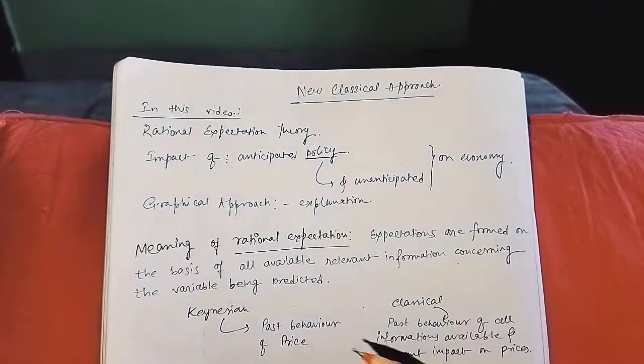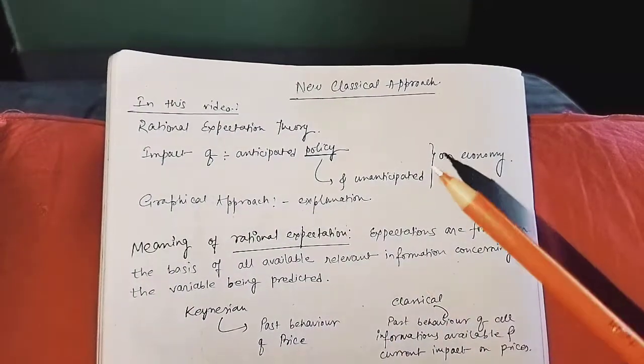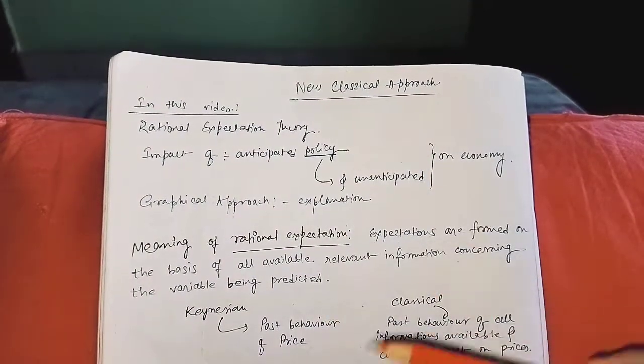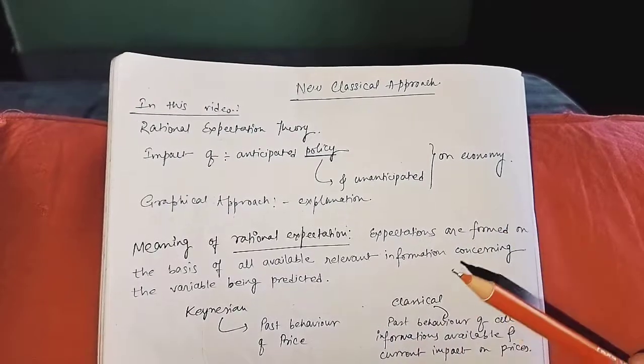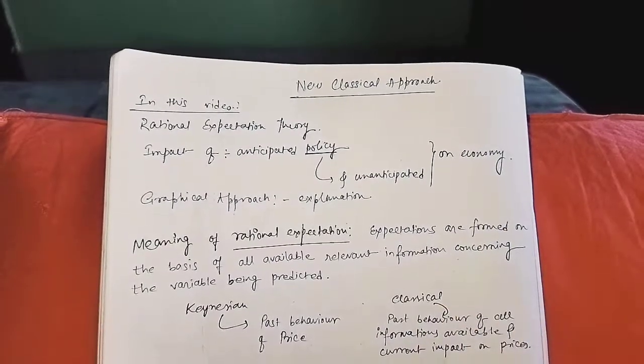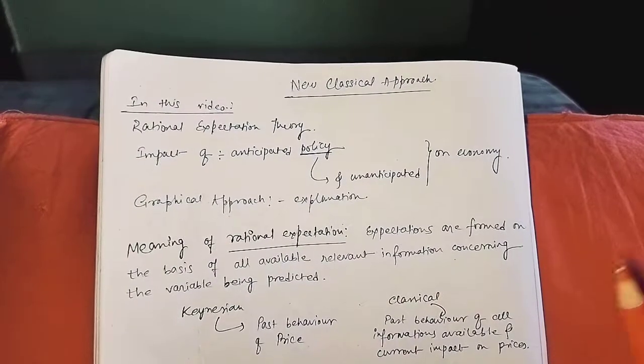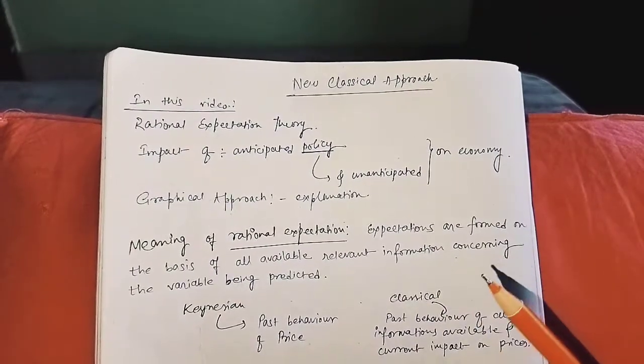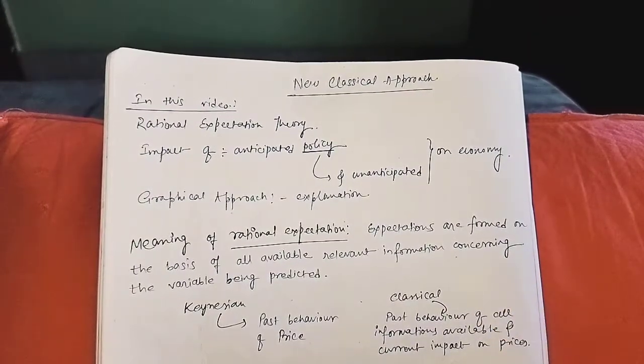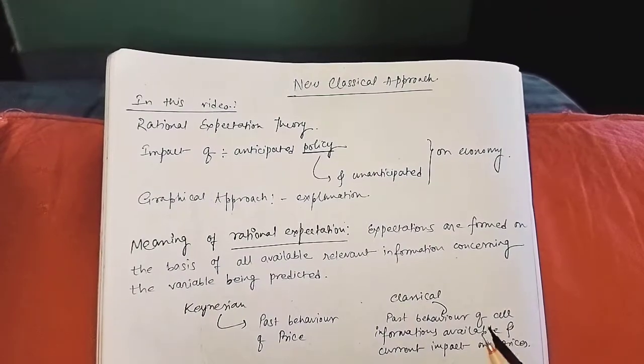We will study these two things and the graphical approach, obviously graphical explanation will decide. We will try to understand the graphical journey. So let's begin. First of all, rational expectation means what is the expectation?